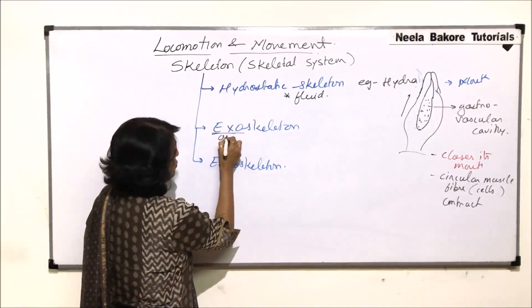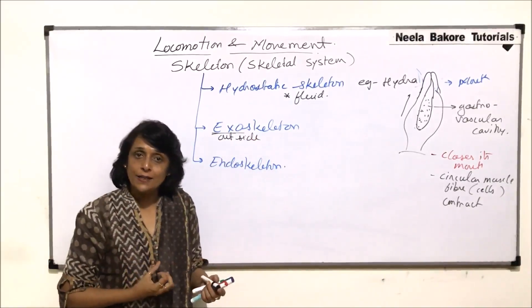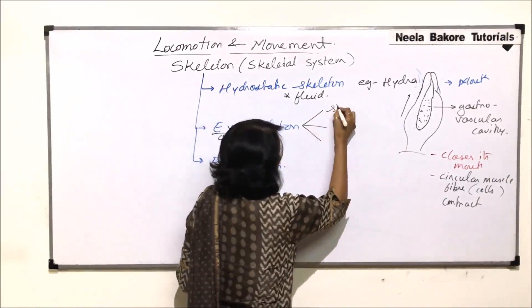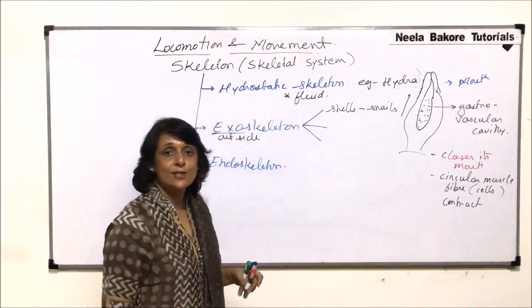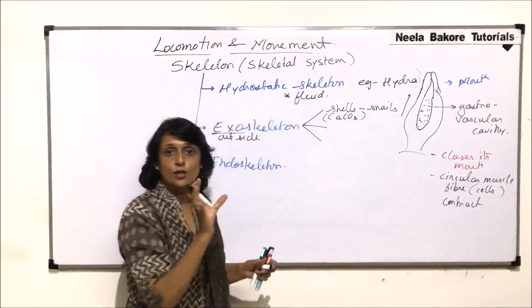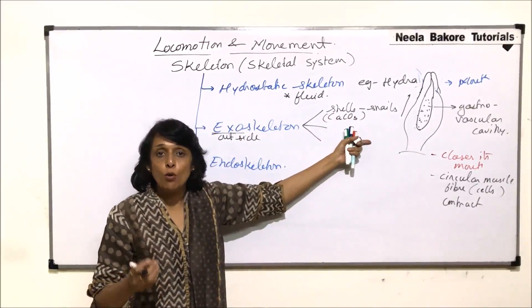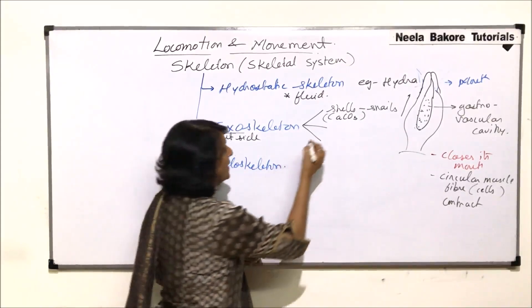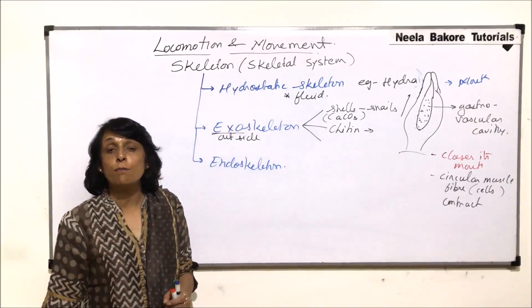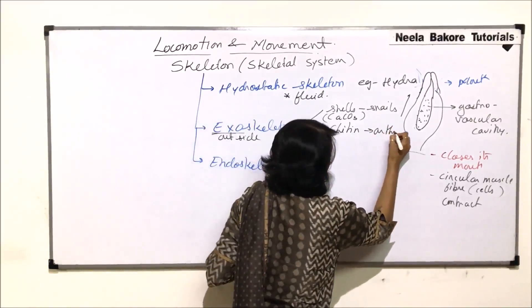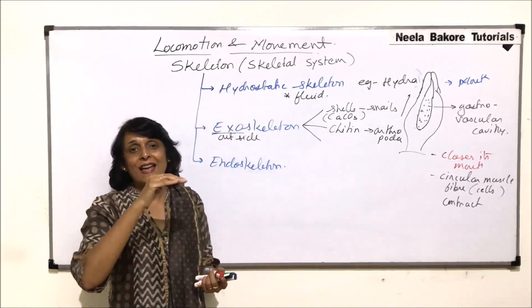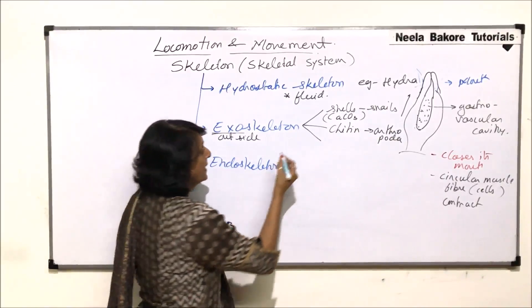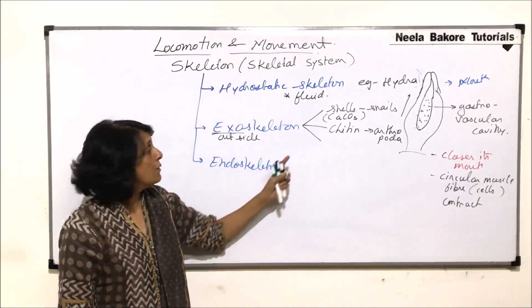Exoskeleton — 'exo' means outside — is a hard structure present outside the body. Examples include shells in snails, which are made of calcium carbonate and serve as a protective structure for their soft bodies. In arthropods such as insects, chitin makes up the exoskeleton — chitinous plates provide protection and framework. In higher animals or vertebrates, we also see structures like scales, which are exoskeletal structures protecting the body.